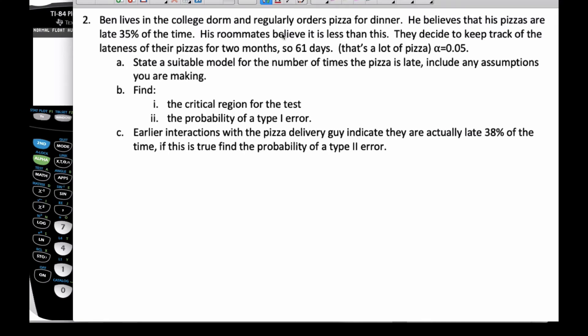Alright, it's Mr. Rupps here, and we're going to do a video on Type 1 and Type 2 error with a binomial distribution. If we read this problem, Ben lives in the college dorm and regularly orders pizza for dinner. He believes that his pizzas are late 35% of the time. His roommates believe that it is less than this.